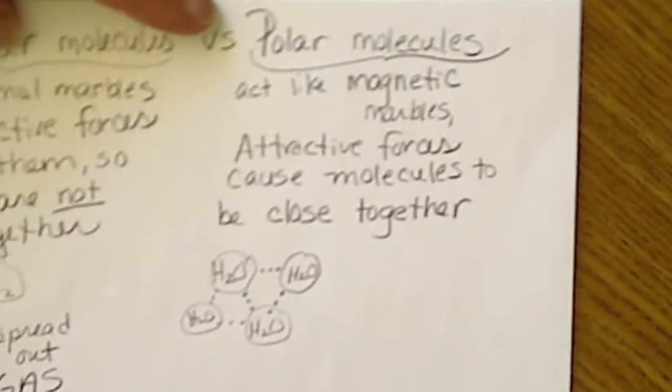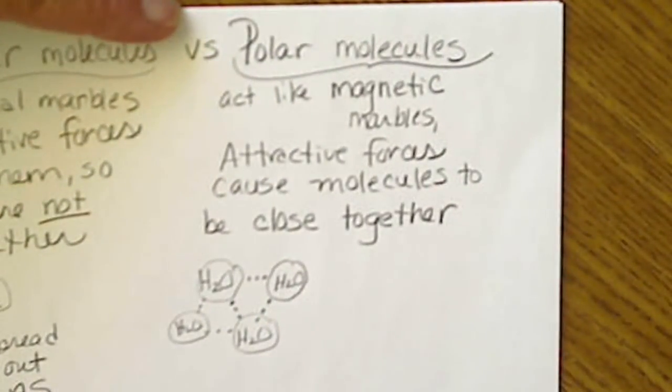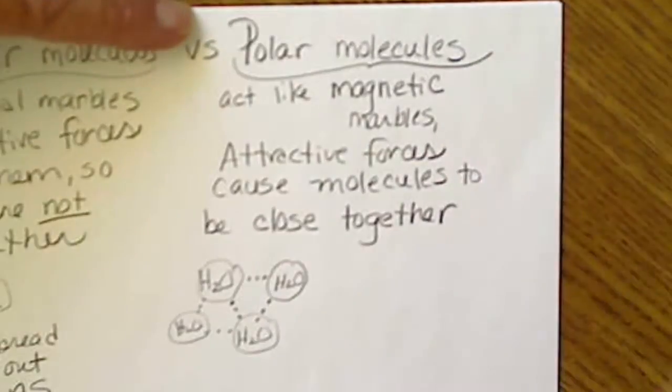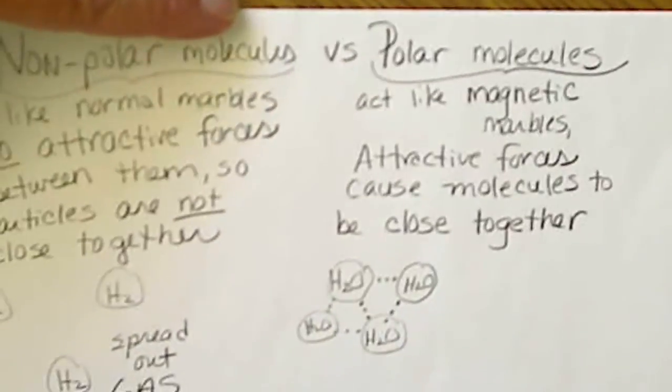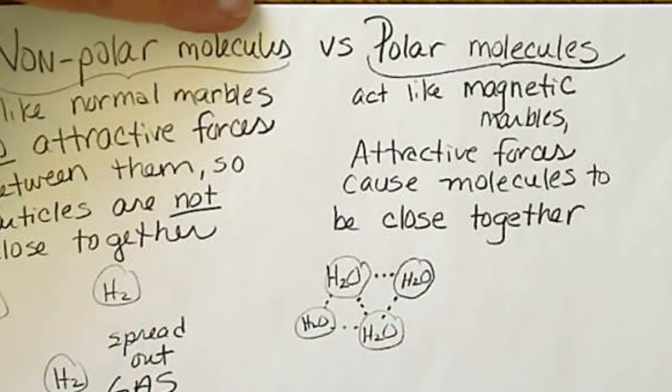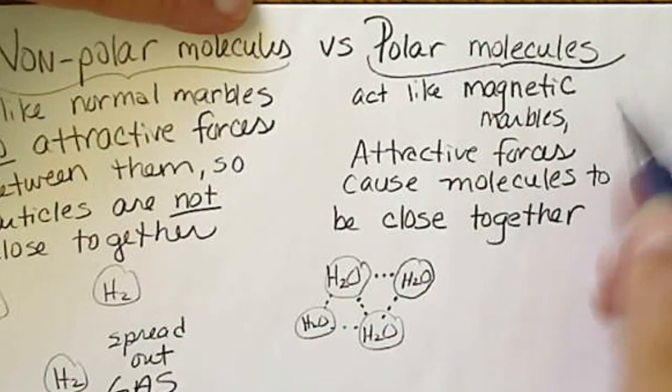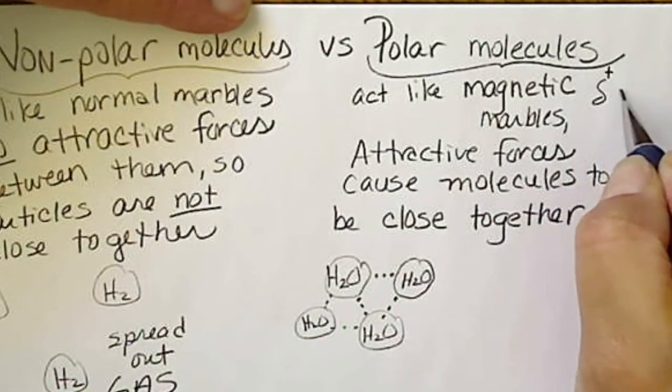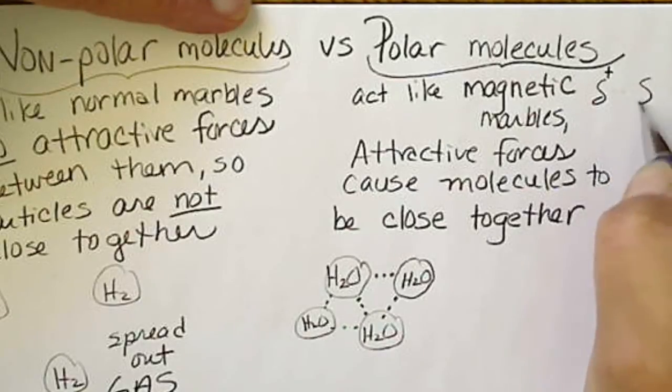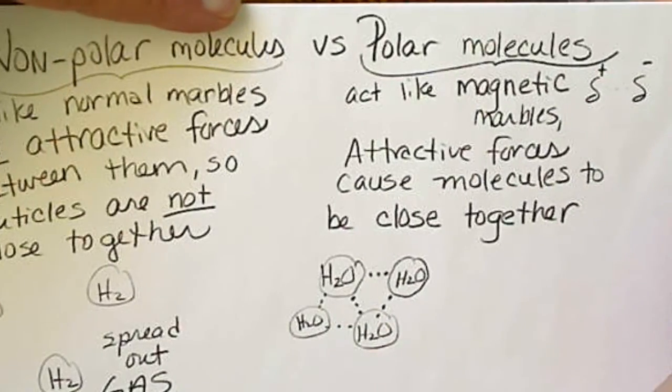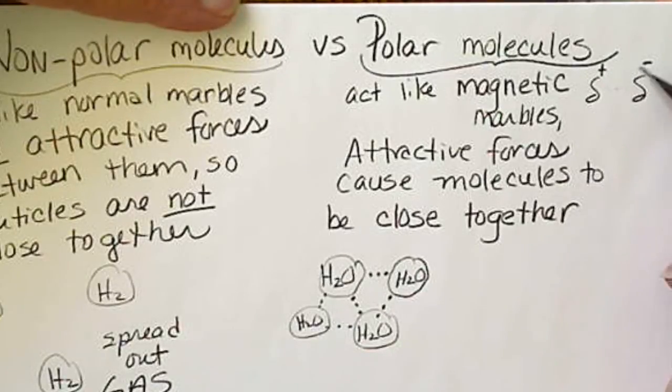If we look at polar molecules, polar automatically means we have a slightly positive side of the molecule and slightly negative side of the molecule. That's because the electrons would be more on one side of the molecule than the other.